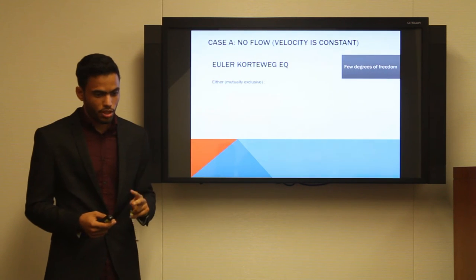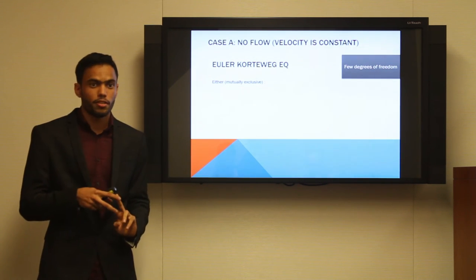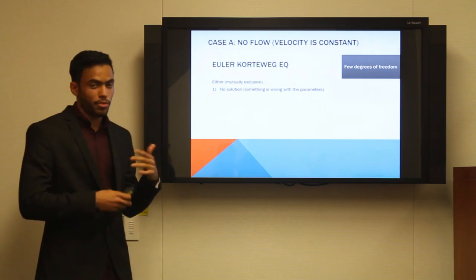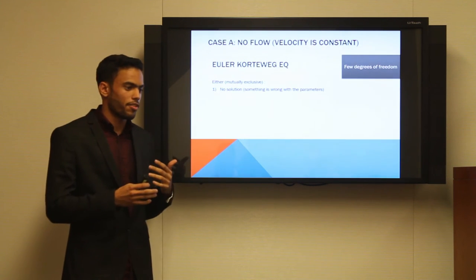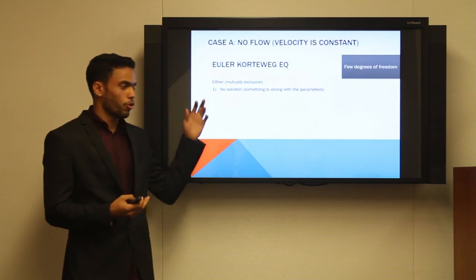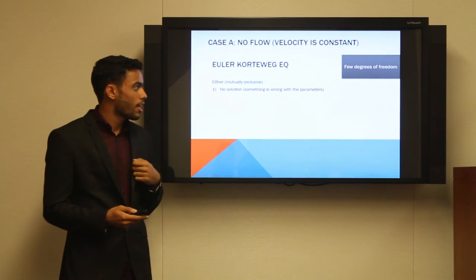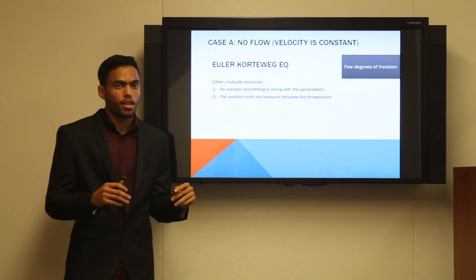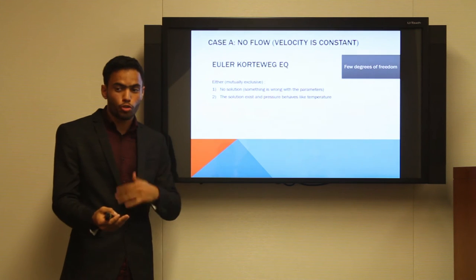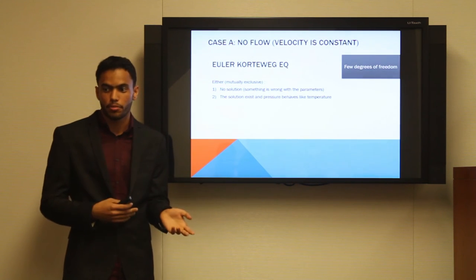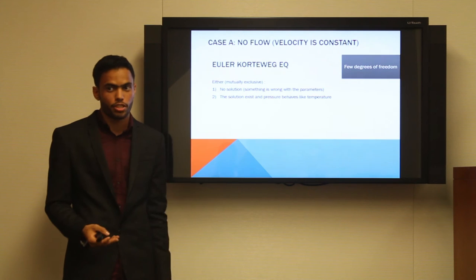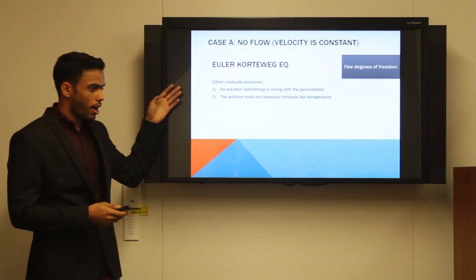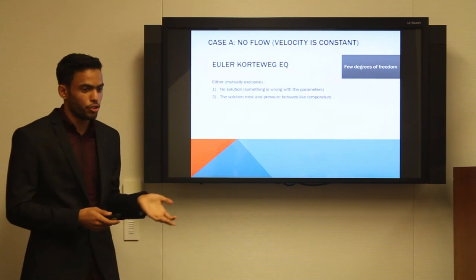We need to make sure that two statements are really mutually exclusive. The first, that if the parameters were to be wrong, if there was something wrong with them, then no solution would be obtained. And the other statement would be that if the parameters were somehow good, then we would have a solution, and on top of that, the pressure would behave like temperature, meaning that both will either increase or decrease, so they will behave similarly. We really need to make sure that these two statements are mutually exclusive.